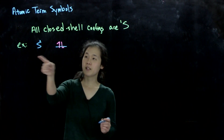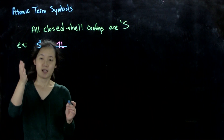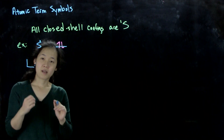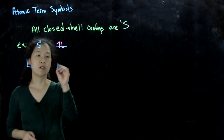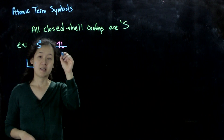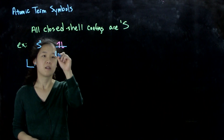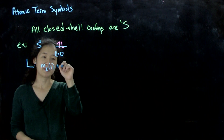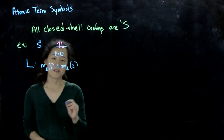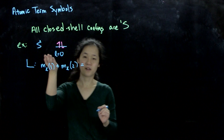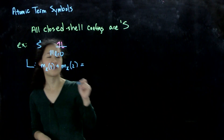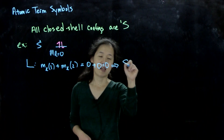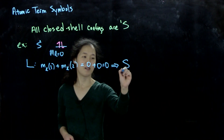Let's figure out what our term symbol is. First we need to find big L, which is the sum of the little m_L's of both electrons. We have two electrons, and m_L is 0 for an s orbital (L equals 0). So m_L of electron 1 plus m_L of electron 2 equals 0 plus 0, which equals 0. Therefore this is an S term — capital S.